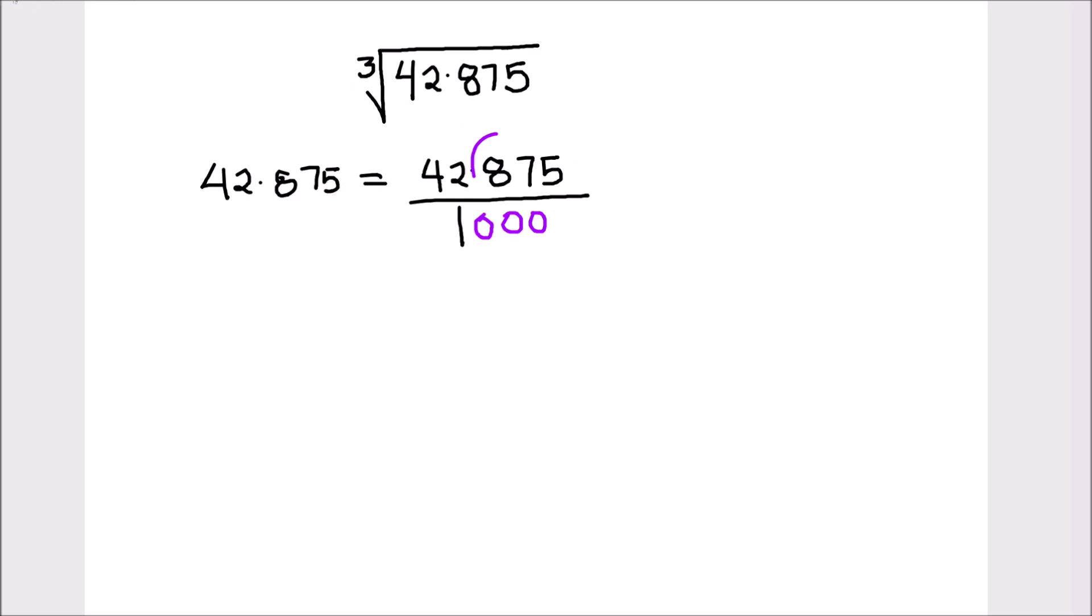So now we have a fraction which is 42,875 divided by 1000. And now we are going to find this cube root of this number. So cube root of 42.875 will be equal to cube root of 42,875 divided by 1000.